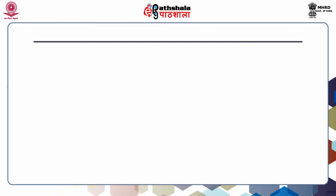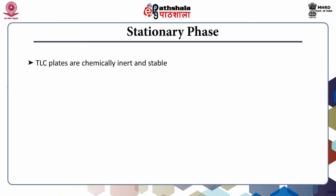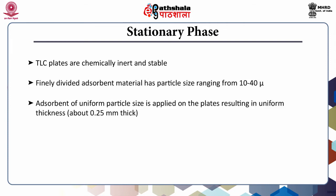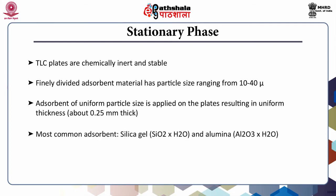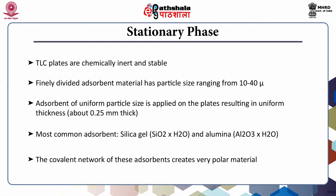The first system component of TLC is the stationary phase. TLC plates are chemically inert and stable, with a thin layer of about 0.25 mm of stationary phase applied on the surface. The stationary phase consists of uniform particle size resulting in uniform thickness. The finely divided adsorbent, with particle size ranging from 10 to 14 microns, is coated on the supporting material. Most commonly used solids are silica gel and alumina, whose covalent network creates a very polar material.